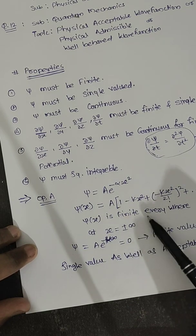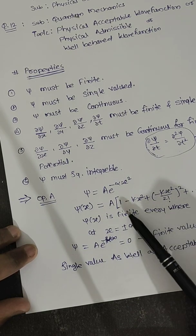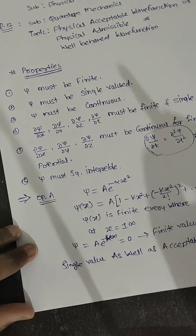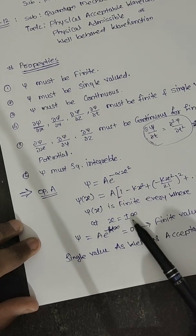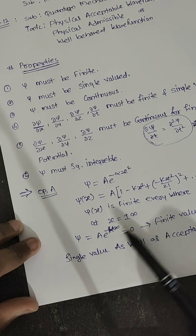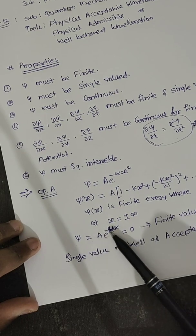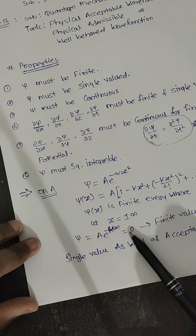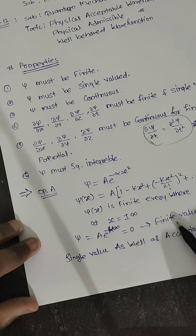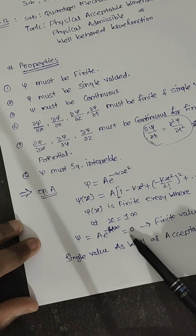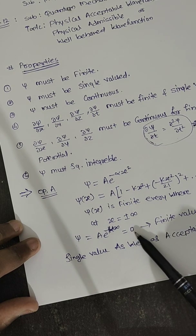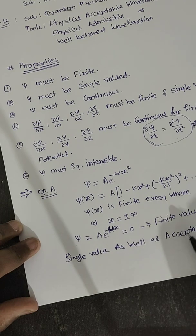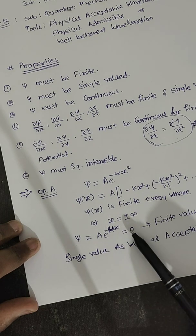When x approaches infinity, psi equals A e to the power minus infinity, which equals zero. Zero is a finite value, and zero is also a single value. So option A satisfies both the finite and single-valued properties, making it an acceptable wave function.